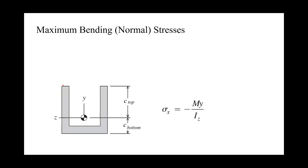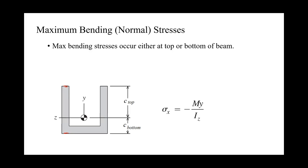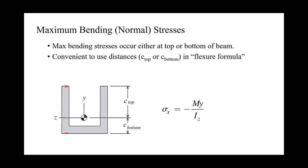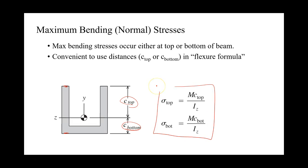The maximum stresses occur at the top or bottom surface of our beam, because that's the furthest distance from our centroid. Instead of using y as a coordinate, we can use what's called c_top and c_bottom — these are distances — giving us equations for the stress at the top and bottom surfaces respectively. Since these equations don't have any negative signs, we need to inspect each situation to determine whether the stress is tension or compression.